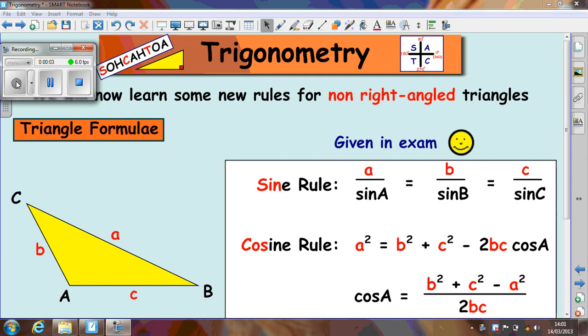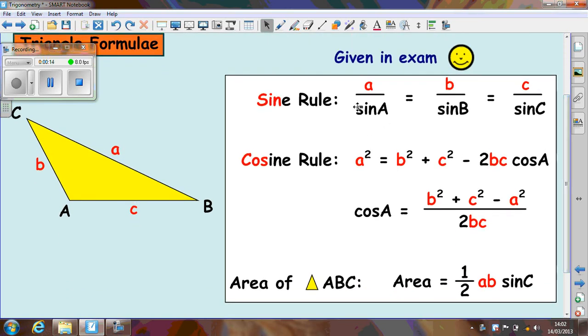In this lesson we're going to look at trigonometry. Trigonometry in Intermediate 2 involves non-right angle triangles. The examples I've got here on this slide are taken from the formula sheet. They will be given, you don't need to learn them.